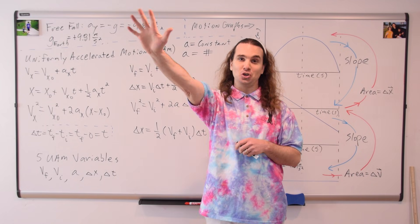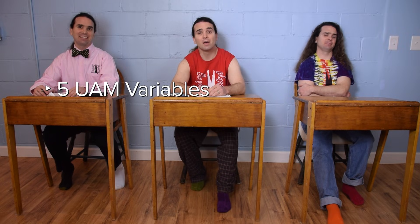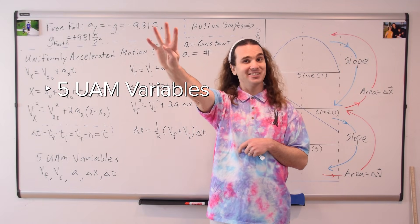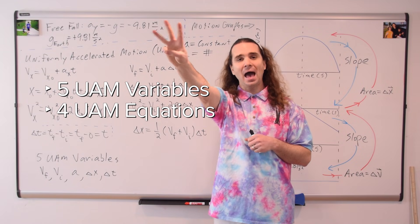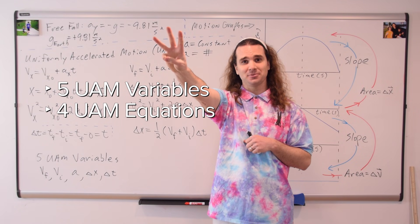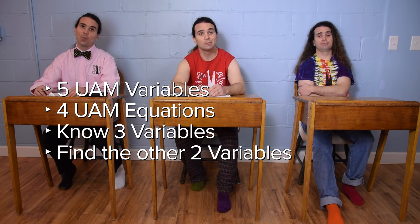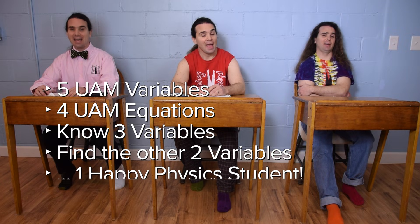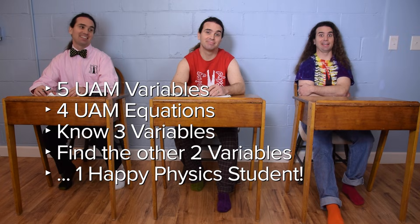Class, there are how many UAM variables? Five. How many UAM equations? Four. If you know how many of the UAM variables? Three. You can figure out the other... Two. Which leaves you with one... Happy physics student. Yeah, I love that. Okay, let's move on to projectile motion.